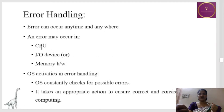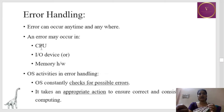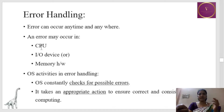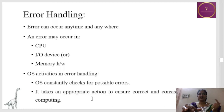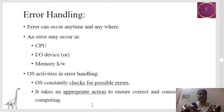The next service is error handling. Errors may occur anywhere or anytime in a process — in the CPU, I/O device, or memory hardware. The OS constantly keeps a check on possible errors, and when an error occurs it takes appropriate action and ensures correction of the error.